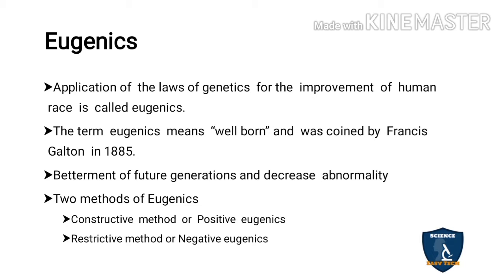There are two methods of eugenics: the constructive method, also called positive eugenics, and the restrictive method, also called negative eugenics.